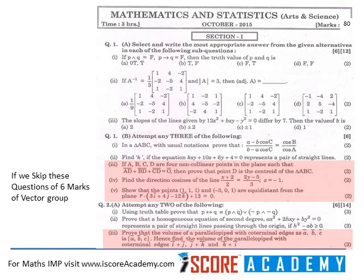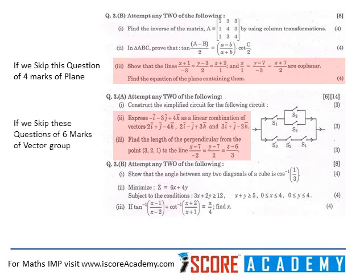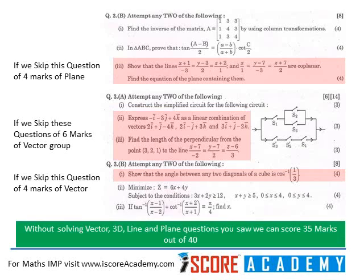Again, question number 2, third part. We have skipped the question which is from the vector group and which is for 3 marks. Similarly, we go on skipping the questions based on vector and vector group which are for 4, 6, and 4 marks.